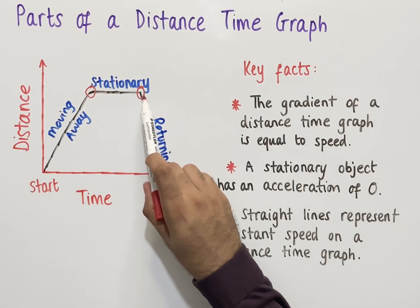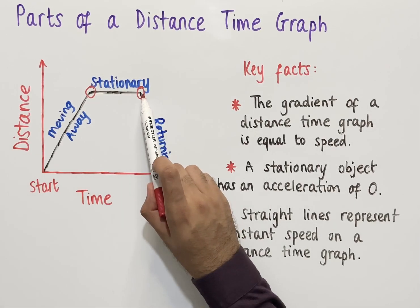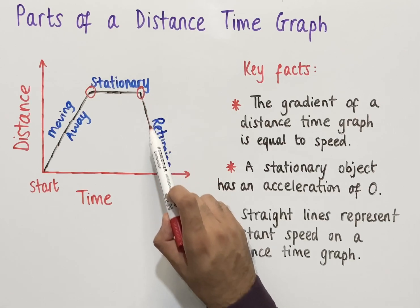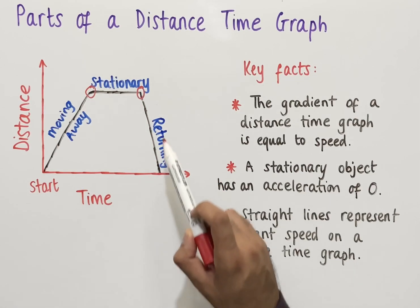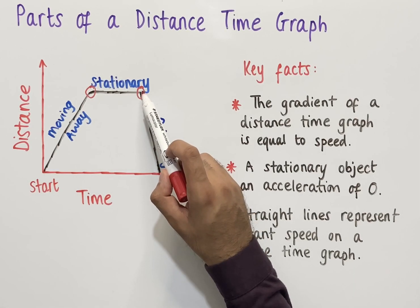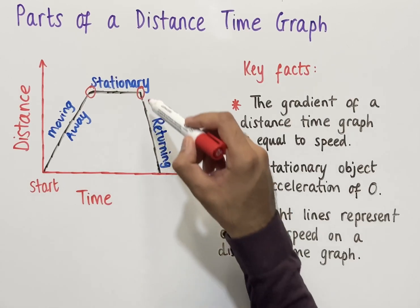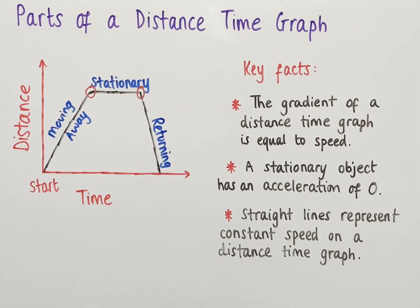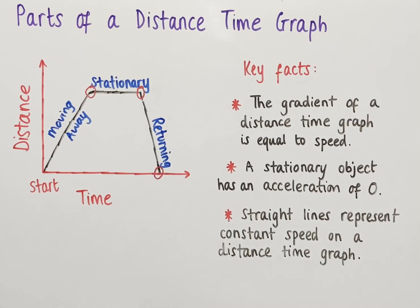The final part of this distance-time graph is that from a certain point the object is returning back to the start position. We see it's moving at a constant speed since we have a straight line, and once it ends up at the bottom the object has returned back to the start.